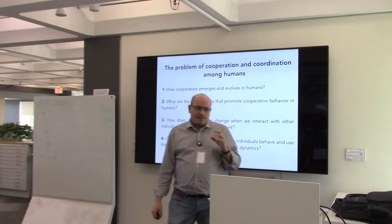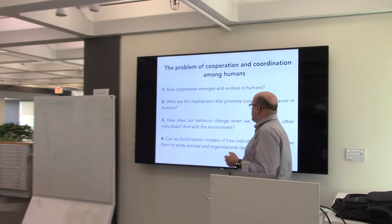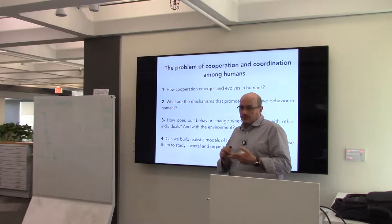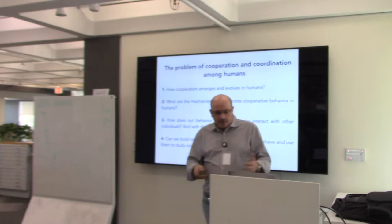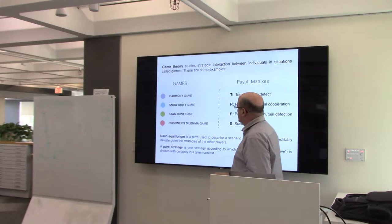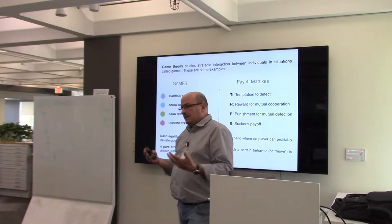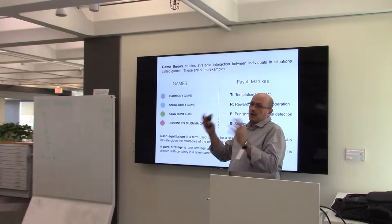One way to study this is game theory. I will focus on the problem of cooperation and coordination among humans. Questions we want to answer include: how did cooperation emerge in humans? What mechanisms promote cooperative behavior? How does behavior change when we interact with others and our environment? Can we build realistic models of individual behavior to study societal or organizational dynamics? Game theory is a branch of applied mathematics studying strategic interactions between two or more individuals. I will focus on four games expressible as two-by-two games with a payoff matrix.